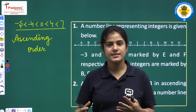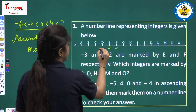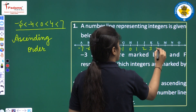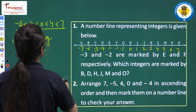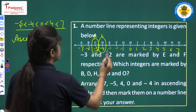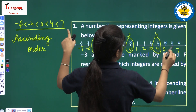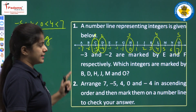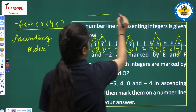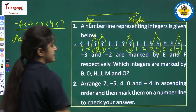This is the ascending order — from the smallest number to the largest number. Now we will mark these numbers on the number line: minus 5 is number 1, minus 4 is number 2, 0 is number 3, then 4, then 7. Clearly, we have marked these numbers on the number line, moving from the left side to the right side, so this confirms the ascending order.